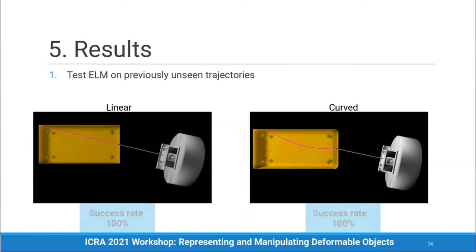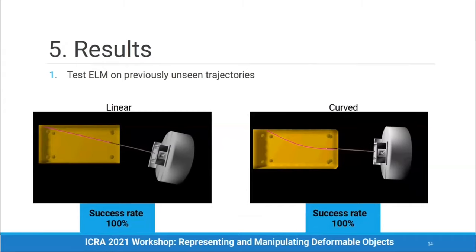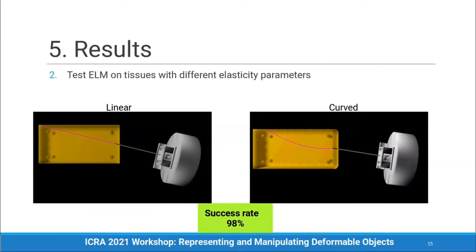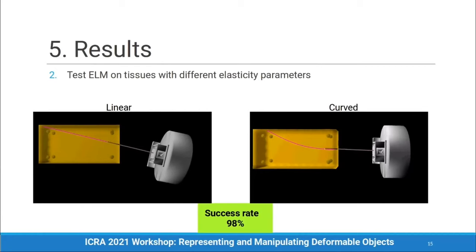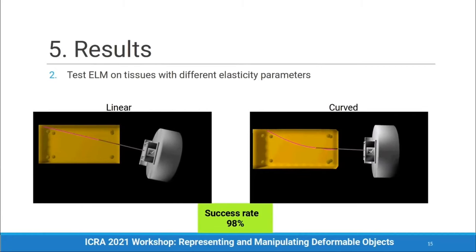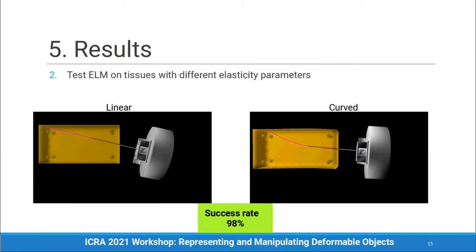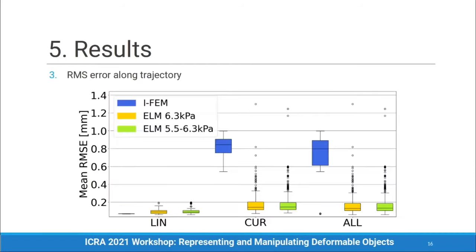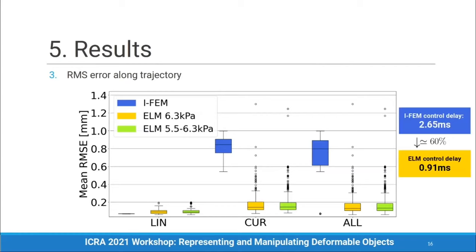To validate our method, we test ELM on previously unseen trajectories of both straight and curved geometry, and also on tissues with different elasticity parameters than those used in training. Results show ELM successfully performed needle insertion in all previously unseen trajectories when varying tissue elasticity parameters. A small subset resulted in unstable insertions where the robotic command drifted away from the target; this occurred for trajectories at the border of the phantom where training data is more scarce. Precision analysis shows ELM provided clinically acceptable precision along successful trajectories. A timing comparison shows a 60% reduction in computational time using the machine learning approach.